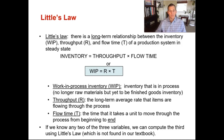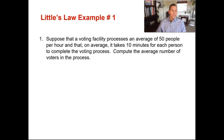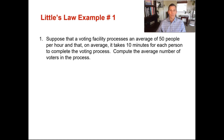Let's go through two examples of Little's Law together. Suppose that a voting facility processes an average of 50 people per hour, and on average it takes 10 minutes for each person to complete the voting process. Compute the average number of voters in this process. I've given you two of the three variables and you need to solve for the third. You know your R, which is your throughput — that's 50 people per hour — and you know your T, which is your flow time — that's 10 minutes per person. We are trying to solve for the WIP.